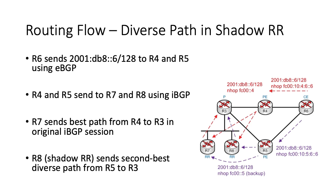R7 will only advertise its best path to R3 per the standard iBGP rules, while R8 will only advertise the diverse path. The same logic used on a shadow session is applied to the shadow route reflector to enable this special advertisement. This ensures that the P and PE devices receive two different paths towards R6 for multipathing purposes.